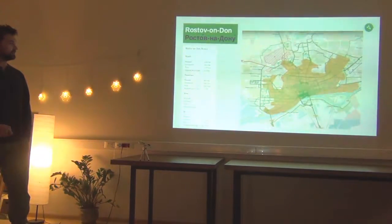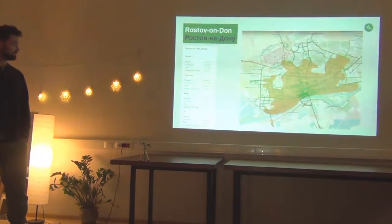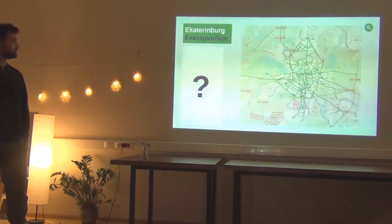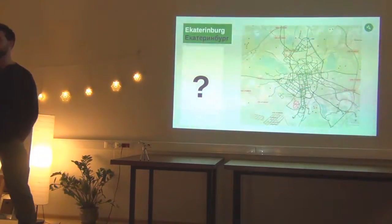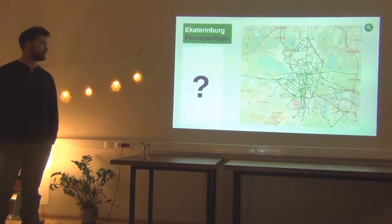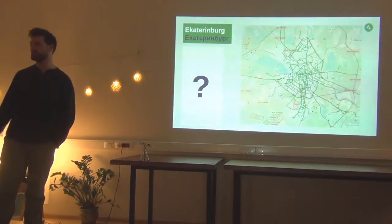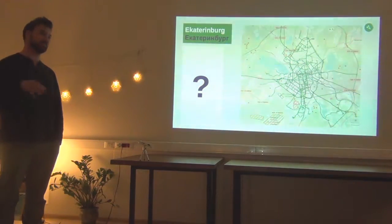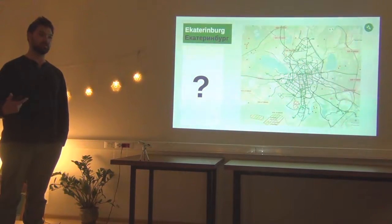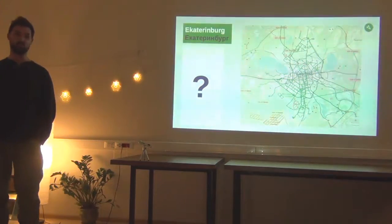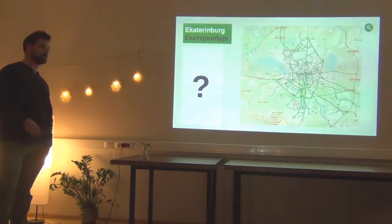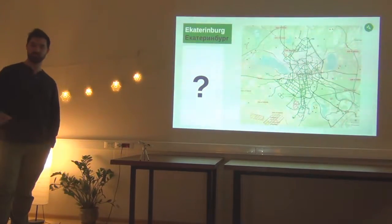Rostov has very high detail in the downtown at 25% mapped, with lots of activity. Ekaterinburg — I don't have the statistics, but you can see it's very good detail and one of our stronger cities in Russia. The Far East we don't have very much — just a few. Novosibirsk has nothing. Sochi has some pieces, including some on the ski resort. I'm hoping this winter people will add skiing photos across Russia and the world to Mapillary.